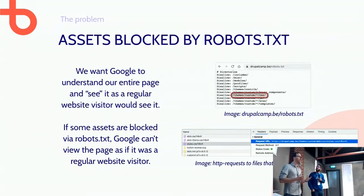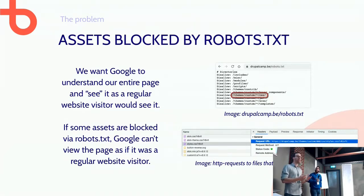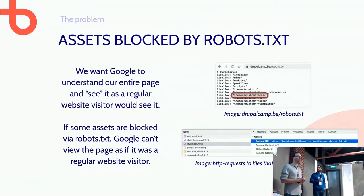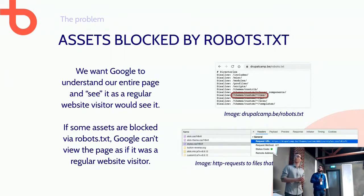We want Google to see and understand our website as a regular visitor would. We want Google to be able to download and crawl all images, all assets, all CSS files, all JavaScript files, icons, JPEGs — anything at all. We want to make sure every file used on the website that a visitor requests, Google can also request. We do not want to block them in robots.txt.